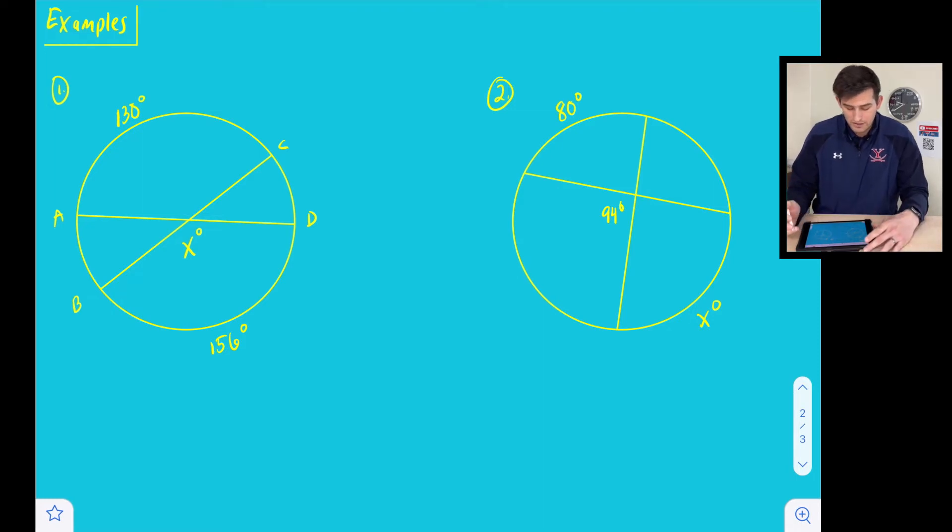So we have all the information we need because we know that X is equal to one half the measure of the intercepted arc, which is 156 degrees, plus the intercepted arc of its vertical angle. Well, its vertical angle is right here, so its intercepted arc would be 130.